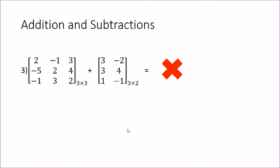Finally, if you try to add a 3 by 3 matrix with a 3 by 2 matrix, you can match the first two columns, but the third column of the 3 by 3 matrix has no corresponding column in the 3 by 2 matrix. Because the dimensions are different, you cannot add or subtract these two matrices.